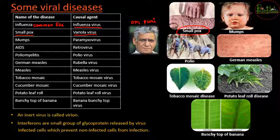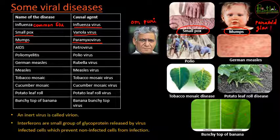Mumps is caused by paramyxovirus and results in inflammation in the cheek. The parotid gland, a salivary gland located at the lower jaw angle, gets infected by paramyxovirus causing swelling - this is characteristic of mumps. AIDS is caused by retrovirus.